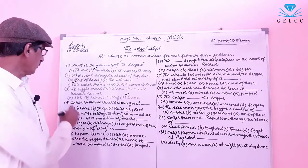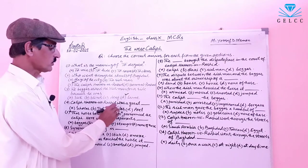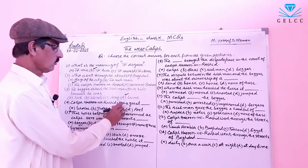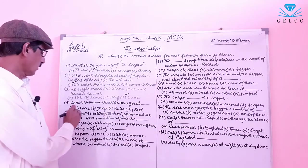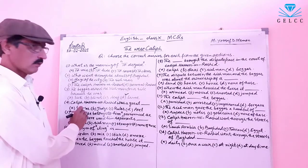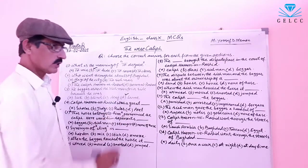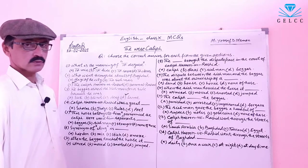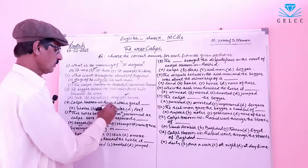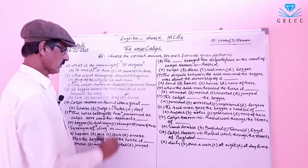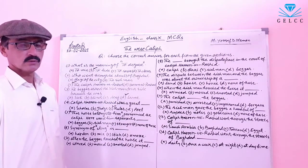Number 4: Caliph Harun al-Rashid was a great what? Options: A: Scholar. B: Judge. C: Ruler. D: Poet. The correct answer is option C — Ruler. The Caliph Harun al-Rashid was a great ruler.